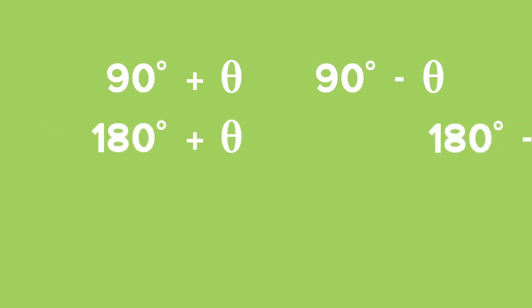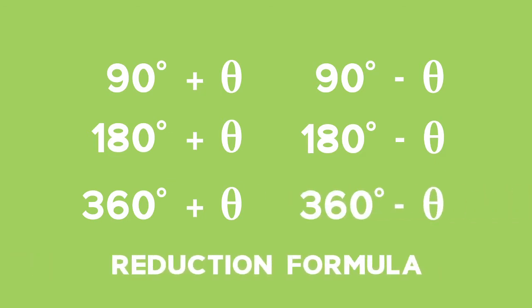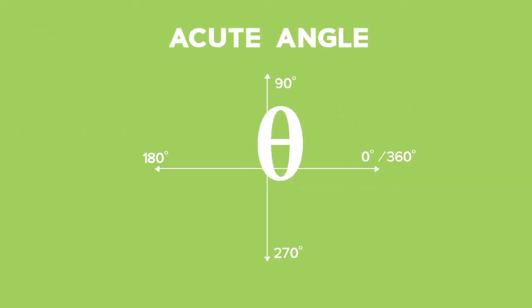When we are dealing with angles that can be written as 90 degrees plus or minus theta, or 180 degrees plus or minus theta, or 360 degrees plus or minus theta, we use reduction formulae to reduce these expressions to simpler expressions with just a single value — theta — which is usually an acute angle, meaning between 0 and 90 degrees.